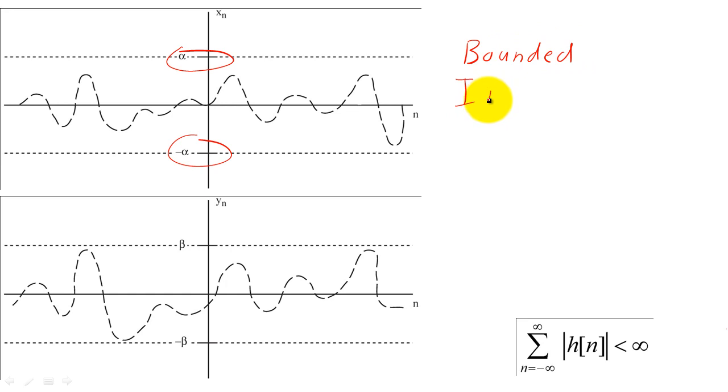Similarly, if an output is bounded, we mean that sequence y of n never has a magnitude greater than beta for all n. If a bounded input always yields a bounded output for h of n, then the system is called BIBO-stable.